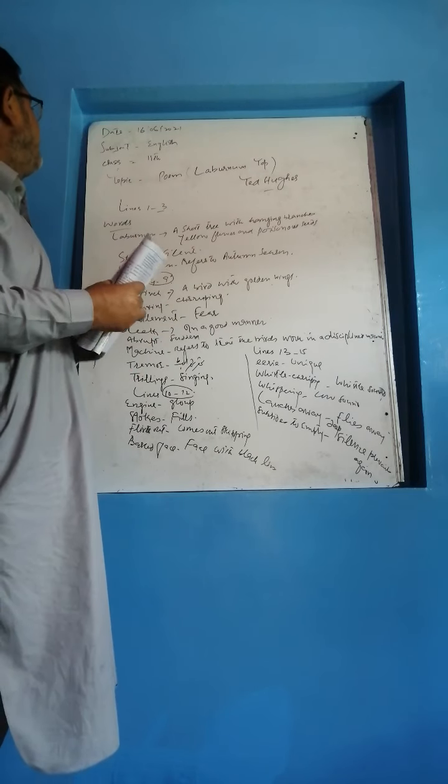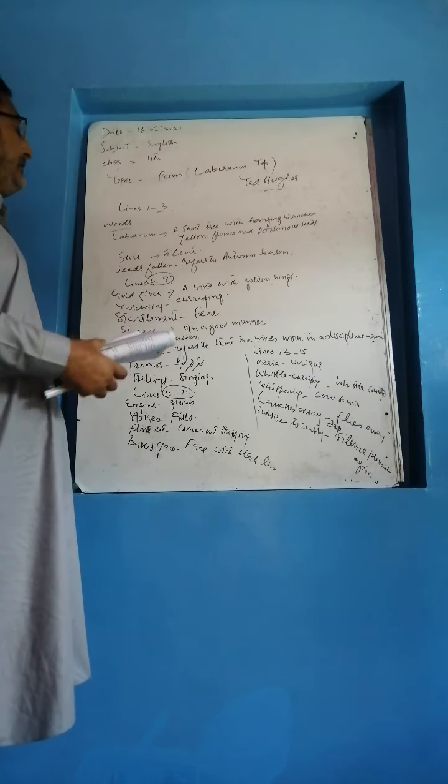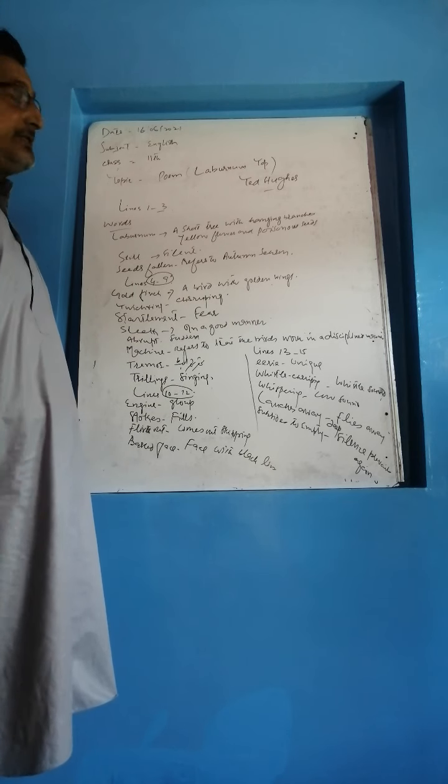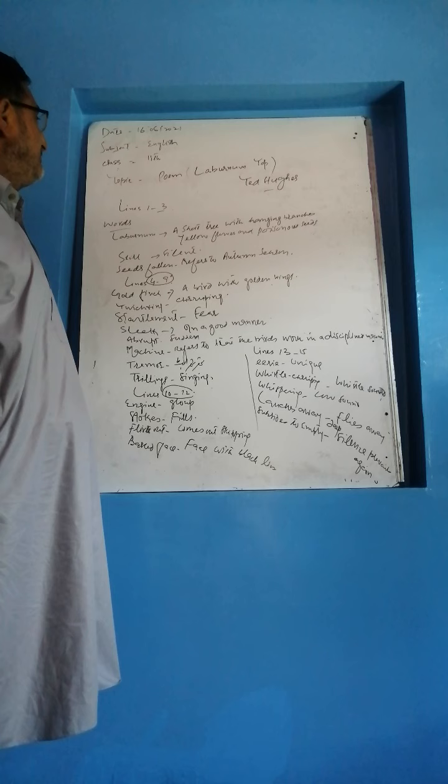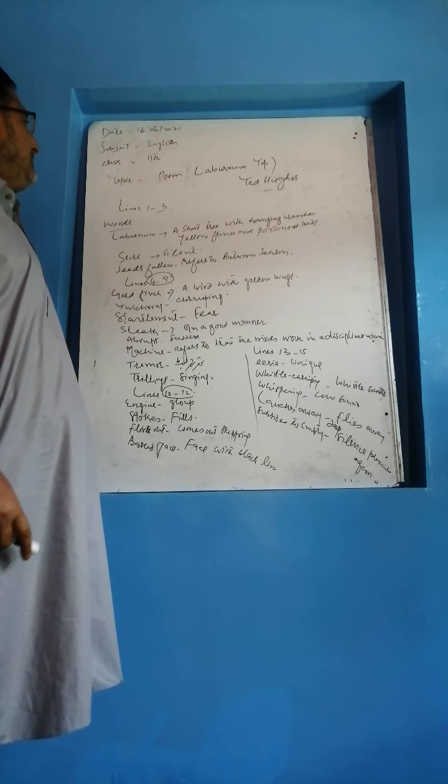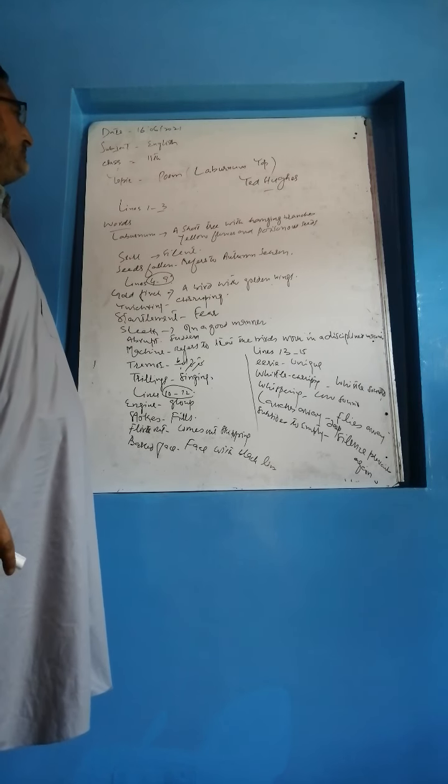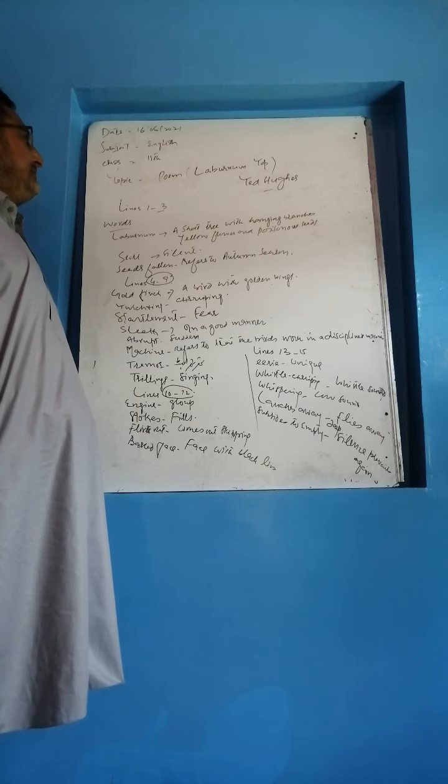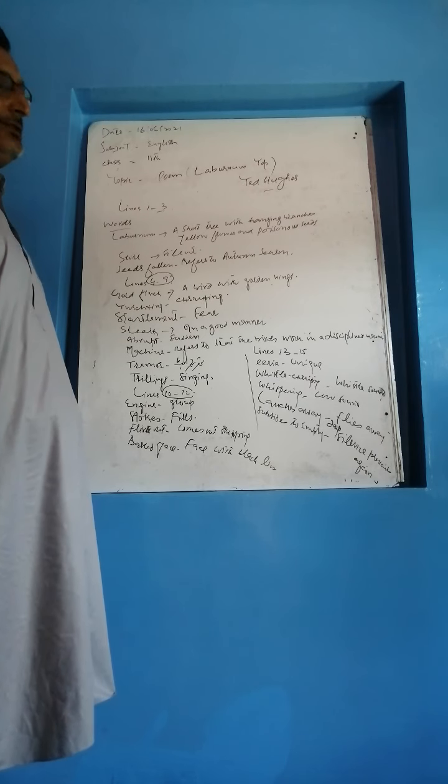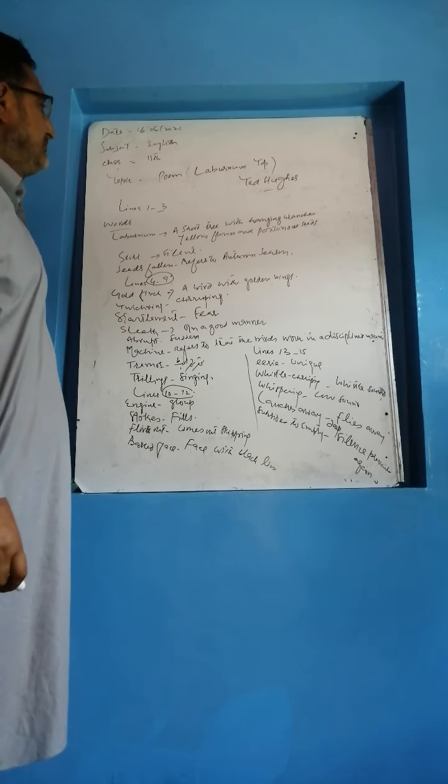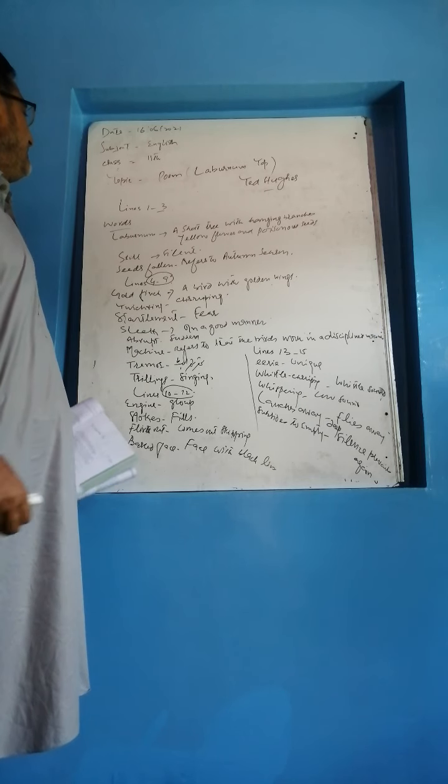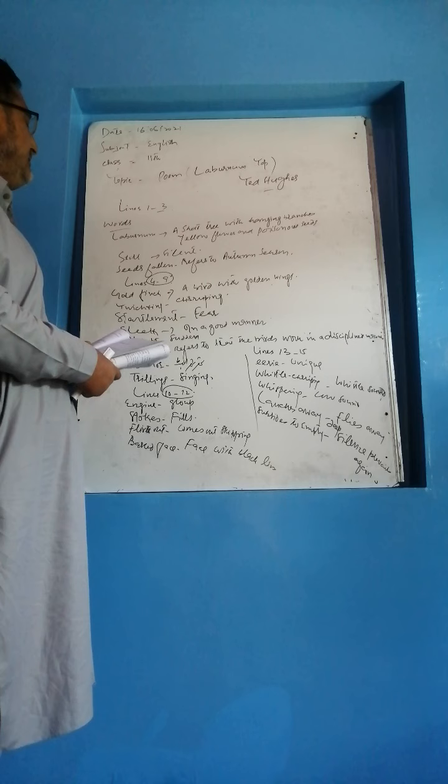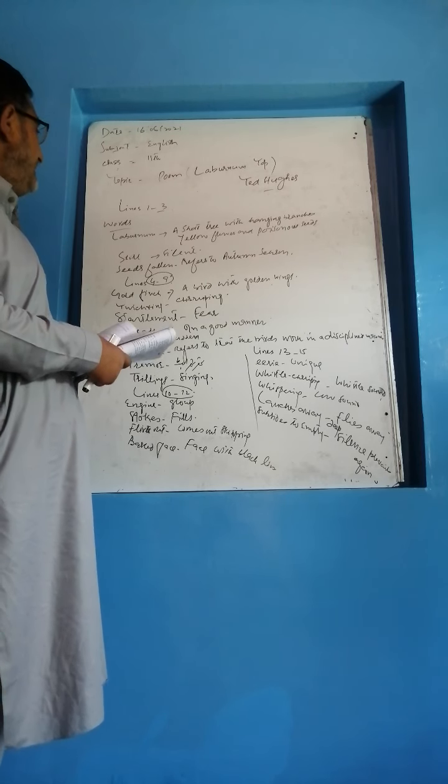Dear students, today we are going to discuss the poem Laburnum Top. It is written by Ted Hughes. So let me read the first three lines of the poem.